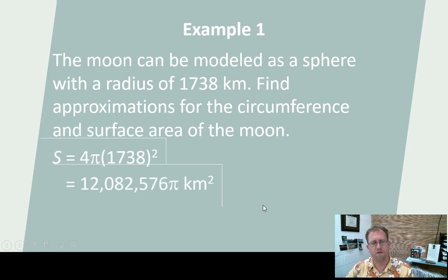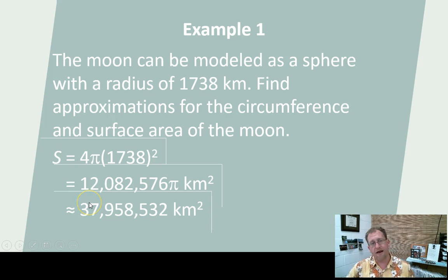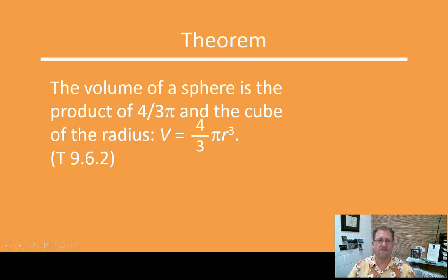Now let's look at what it would take to pave the thing. Same thing, 4 pi r squared. 4 times pi times the radius squared is 12,082,576 pi square kilometers. Holy moly, Batman. And then if we want to reduce that to an approximate decimal equivalent, 37,958,532 square kilometers of asphalt. It's going to be a lot of rocket ships to pave that thing. But when it's done, talk about an awesome slick track, right?